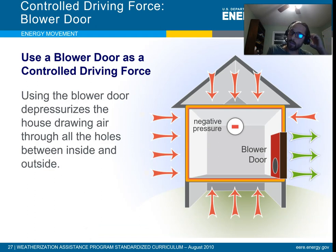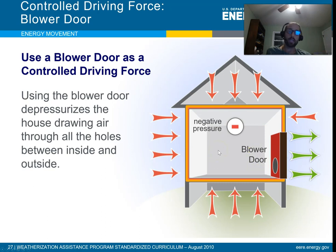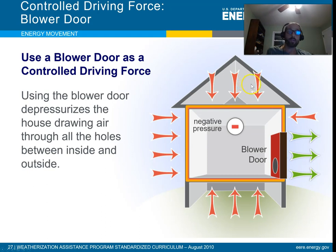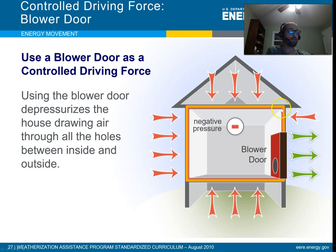In energy auditing, an important tool is the blower door — a giant fan placed in an exterior doorway that depressurizes the building. This creates a large negative pressure zone, forcing air in through all the little direct and indirect leakage areas, which helps identify leaky spots in the building. It can also help identify missing insulation and sometimes water damage.